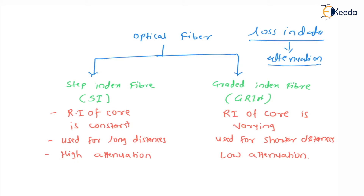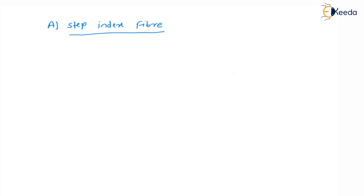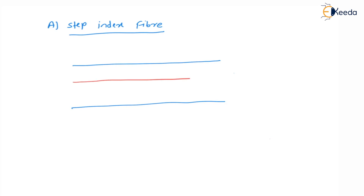Step index fiber is the simplest type of optical fiber. If we draw a simple optical fiber, the center part is the core medium. In step index fiber, the core diameter is the smallest one, and then we have cladding — the cladding diameter is about 10 times the diameter of the core, especially for step index fiber.